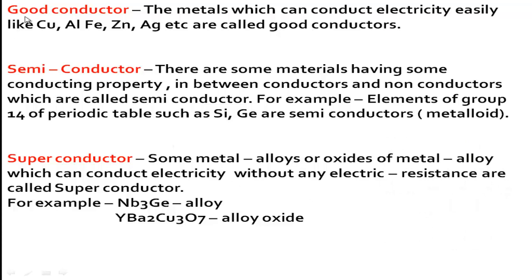Now, which are good conductors? The metals which can conduct electricity easily — like copper, aluminium, iron, zinc, silver, etc. — are called good conductors. Their electric conductivity is high; they conduct electricity with very little resistance and are known as good conductors.